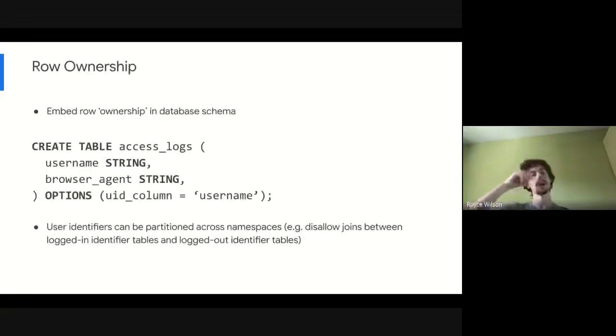Looking closer at row ownership, we embed it as part of table schema or metadata. In this case, our access logs, maybe there's a logged in user name that we log in addition to the browser agent. And that's what we can use to define who a user is. One notable extension that you might want to consider to this is we can partition user identifiers across namespaces. So maybe we want to differentiate between a logged in identifier like a username and a logged out identifier such as a cookie token. And we don't want to allow joins between those identifier spaces because they're illogical. There's no mapping between them. So this is an additional thing that maybe we can introduce in our rewriter layer that does this additional validation and enforcement to make it easy for the analyst to write queries by default that do the right thing.